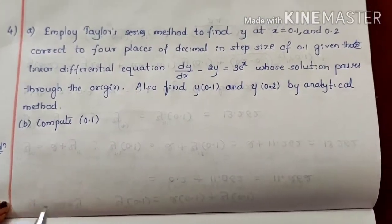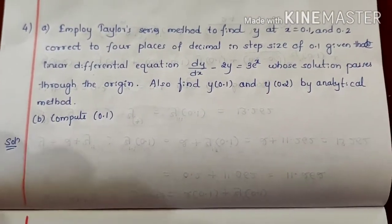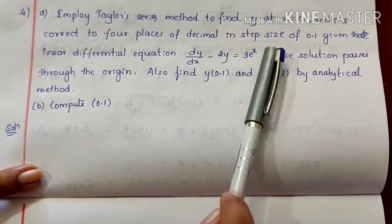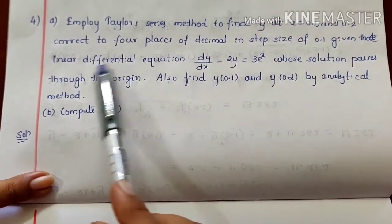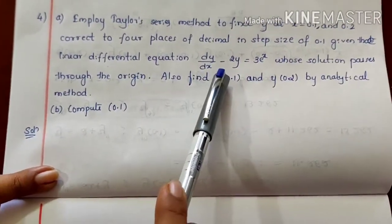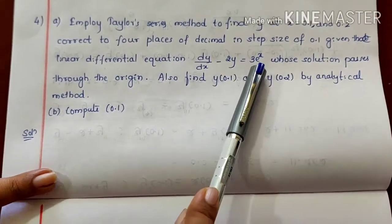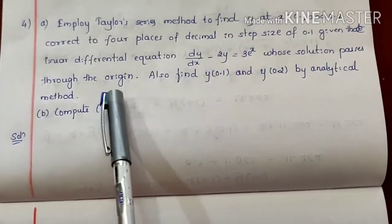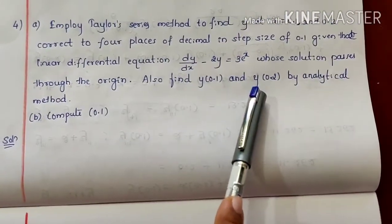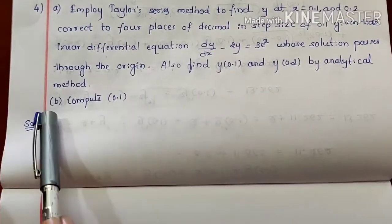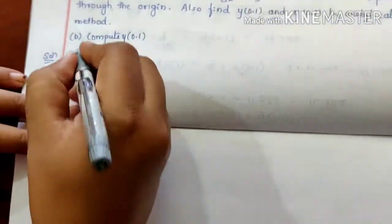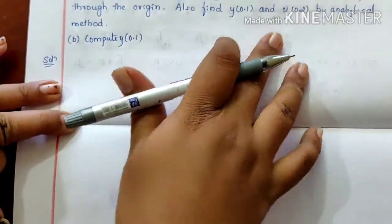Next example: employ the Taylor series method to find y at x equal to 0.1 and 0.2, correct to four decimal places with a step size of 0.1, given the linear differential equation dy/dx minus 2y equal to 3 into e raised to x, whose solution passes through the origin. Also find y(0.1) and y(0.2) by analytical method.